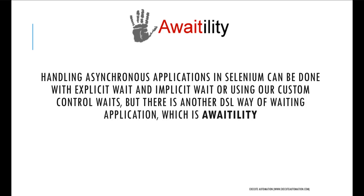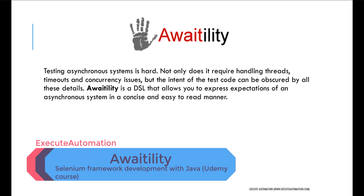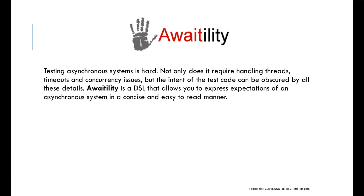Handling asynchronous applications in Selenium can be done not only with explicit and implicit waits or custom control waits, but there is another DSL way of waiting — which is Awaitility. Testing an asynchronous system is hard: not only does it require handling thread timing and concurrency issues, but the intent of the test code can be obscured by all these details. Awaitility is a DSL that allows you to express expectations of an asynchronous system in a concise and easy-to-read manner.